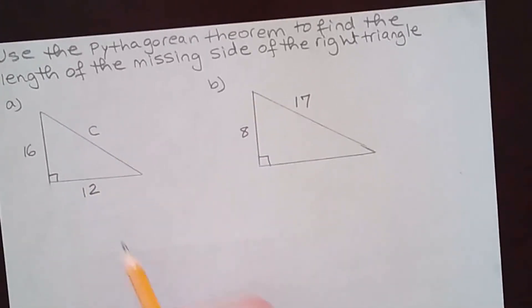The hypotenuse I'm calling it c and that's the side opposite the 90 degree angle. Using the formula a² + b² = c², this could be a and this is b, or this is a and this is b.